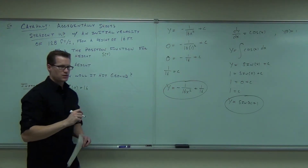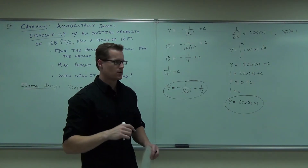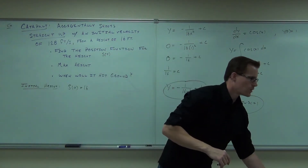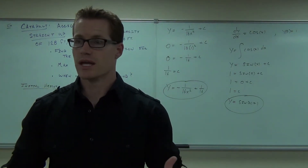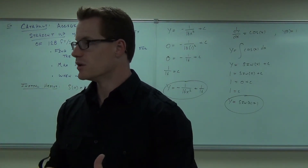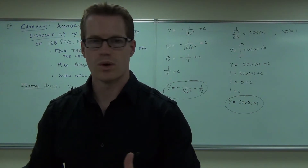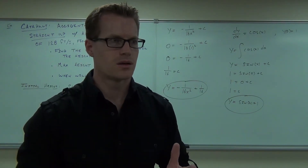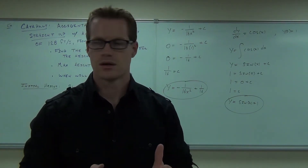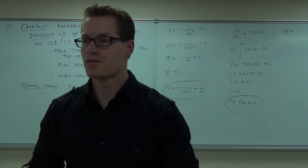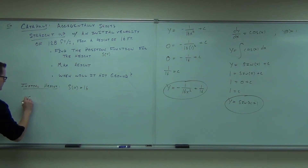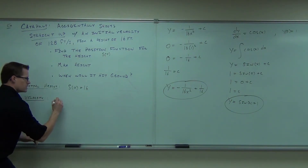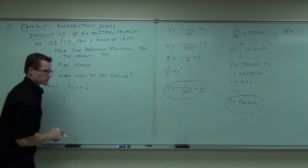What's the velocity? 120 feet per second. Going positive, 120 feet per second. Now here's a good question for you: what is velocity in relation to a position function? It's the first derivative. Velocity is the first derivative of a position function.